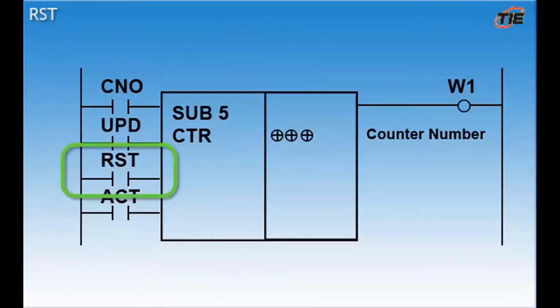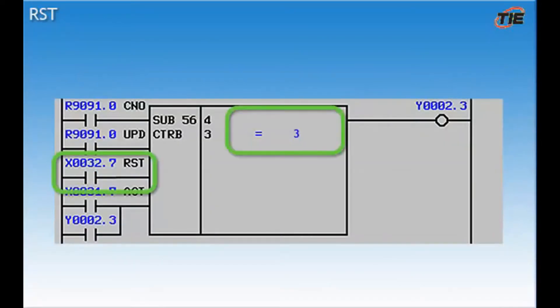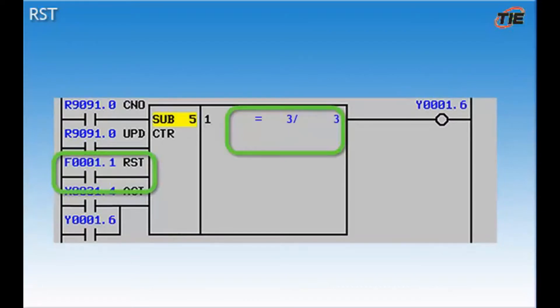Now the last setting is the reset input. This is fairly simple. When this input goes high, even for one scan of the ladder, it will reset the counter back to the beginning so that it starts over. As an example, I can set this contact to F1.1. This is the reset signal from the CNC. When someone presses the reset button, it will activate this input and reset the counter.